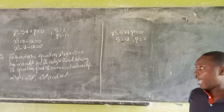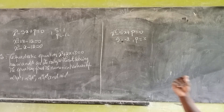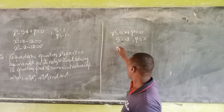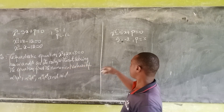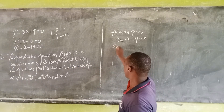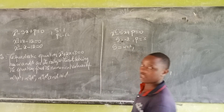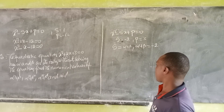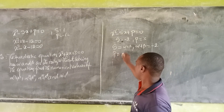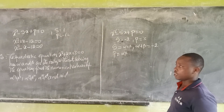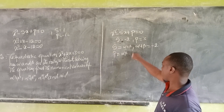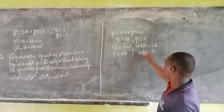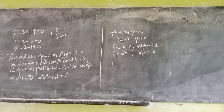Remember, S stands for the sum of the roots of the equation, that is to say S is equal to alpha + beta. Here, alpha + beta equals negative 2. P is the product of the roots, the product of alpha and beta. Here, alpha × beta is 3. To answer question 1, we have alpha² + beta².